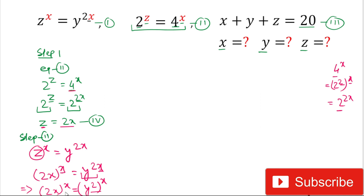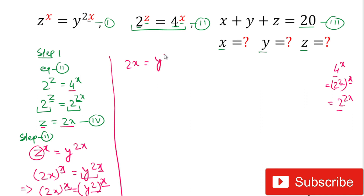In these equations the power is the same — x on both sides — so we can equate the bases. The base on the left-hand side is 2x and the base on the right-hand side is y squared. Therefore 2x equals y squared. Let us call this equation 5.